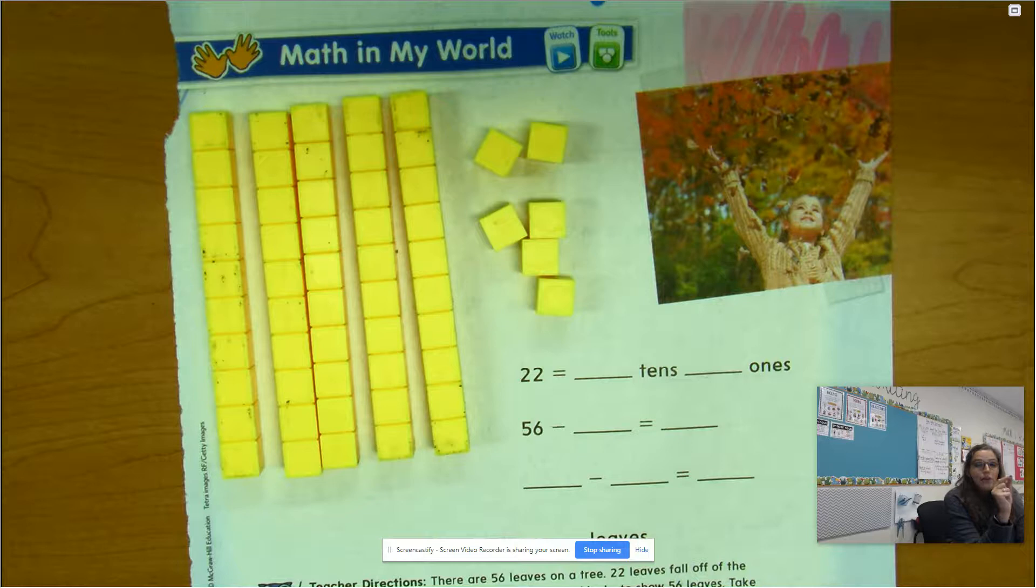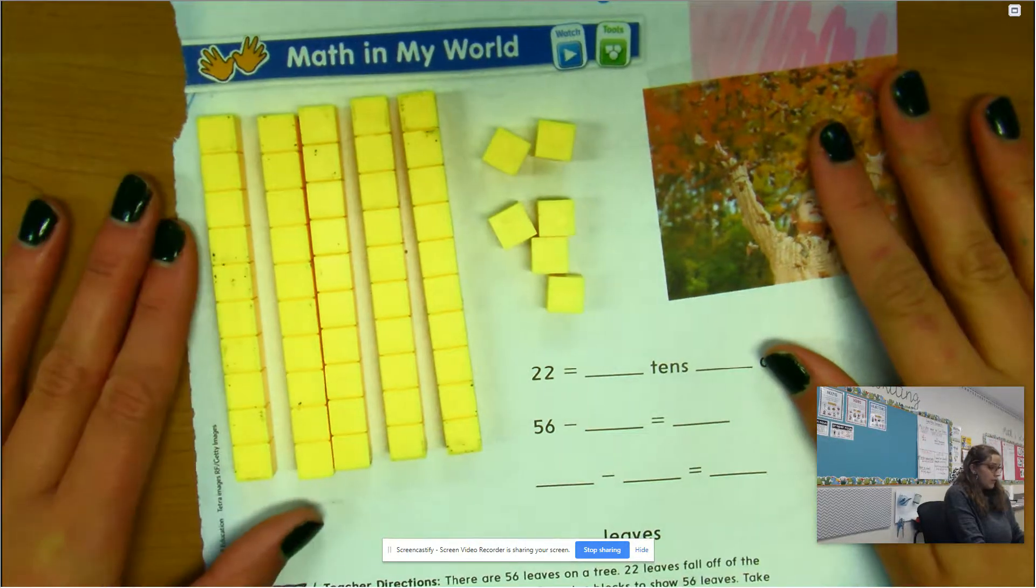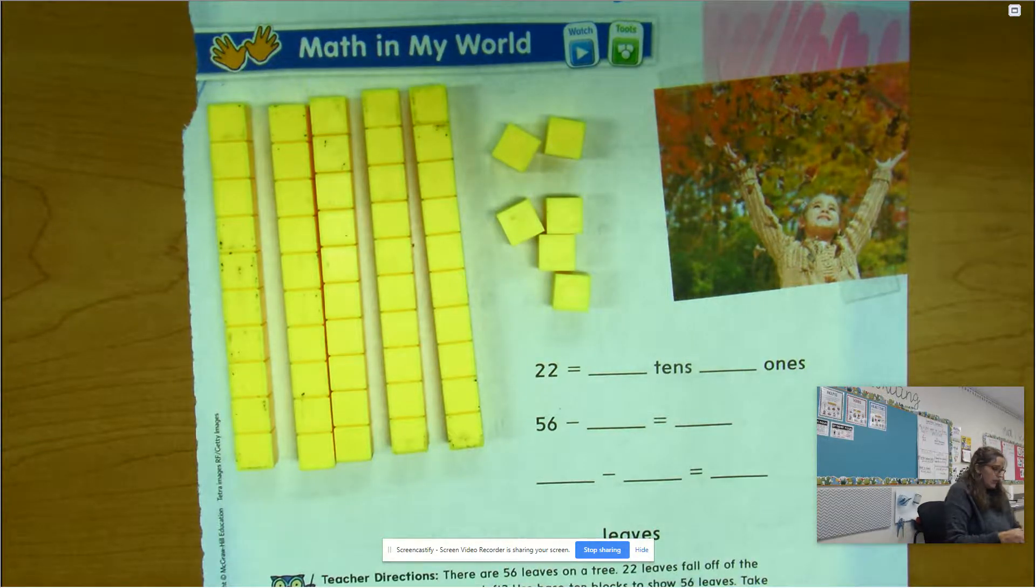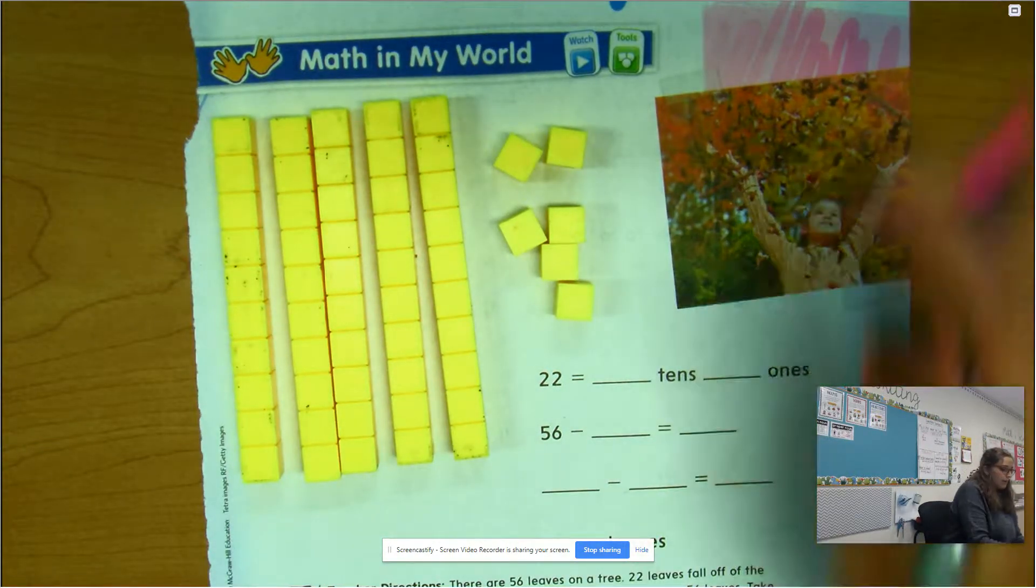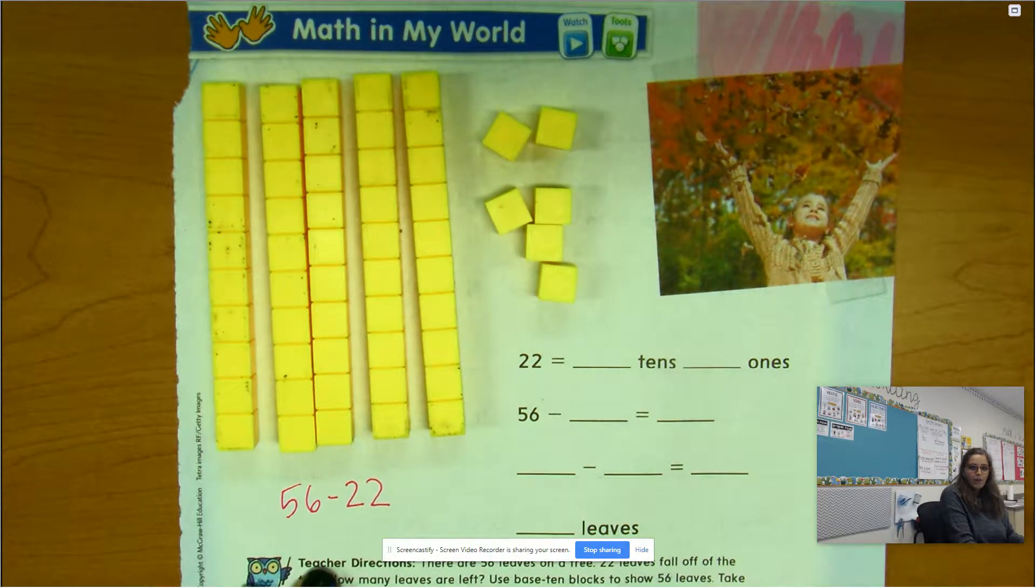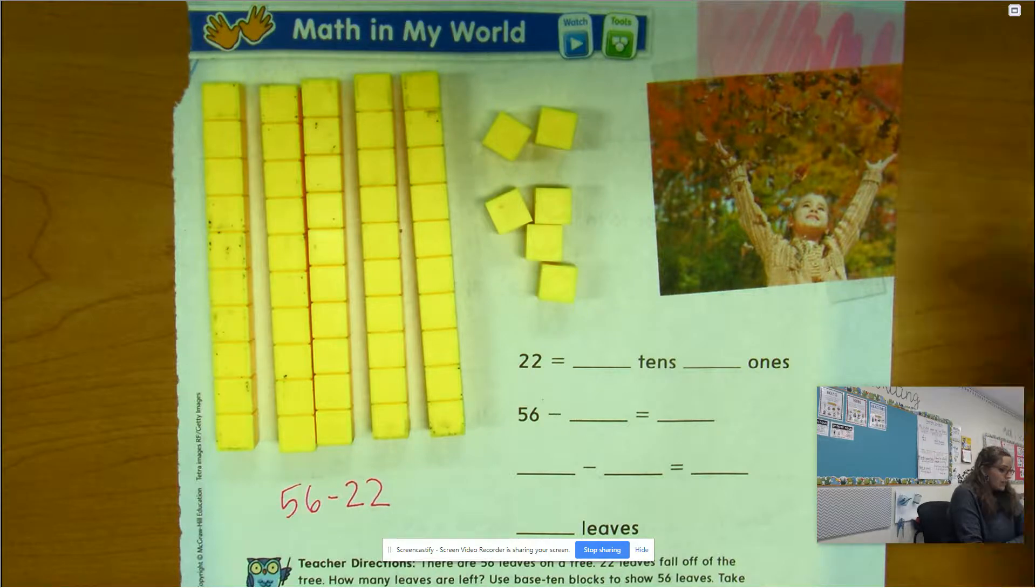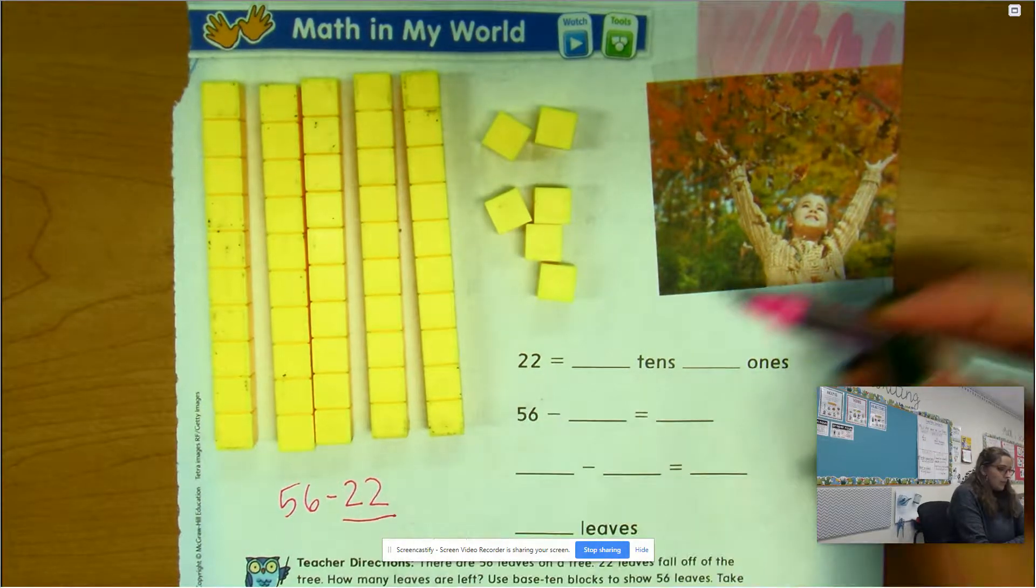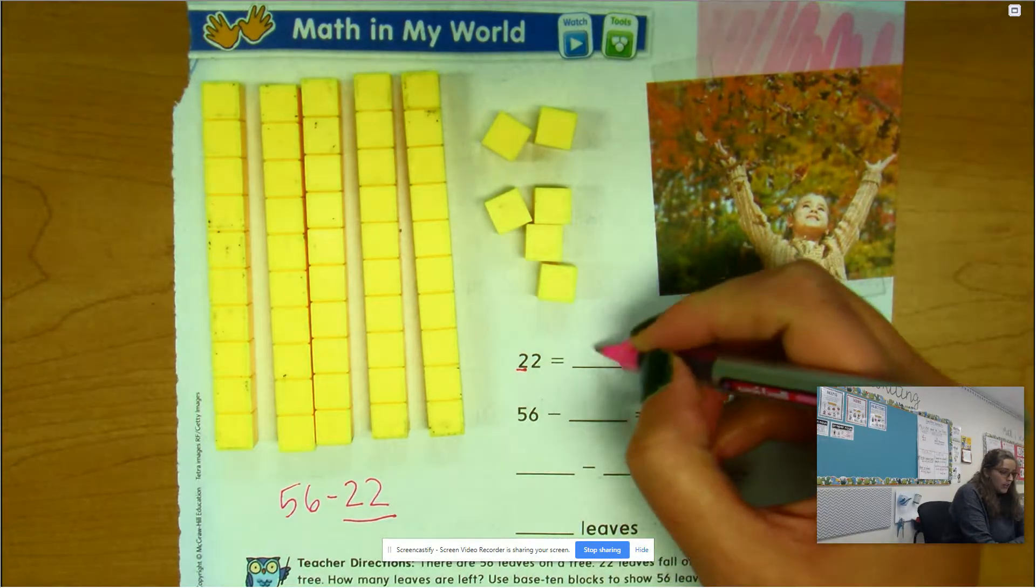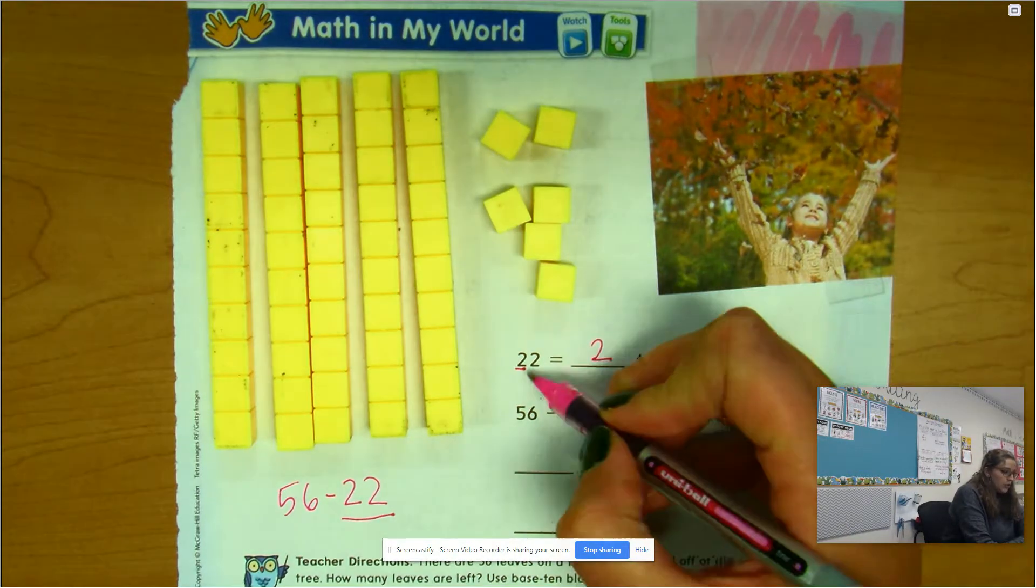With the temperature, we said what would be a good way to count up - we would do the tens first and then the ones next, right? So that's what we're going to do. We're going to look at 22, that's the number we're taking away. This is our full number sentence: 56 minus 22. Write that at the bottom of your paper. The number that we're taking away is what we're going to split into tens and ones. If there's a 2 in the tens place, that means there are two tens, and there's a 2 in the ones place, that means there are two ones. Fill that in on your paper.